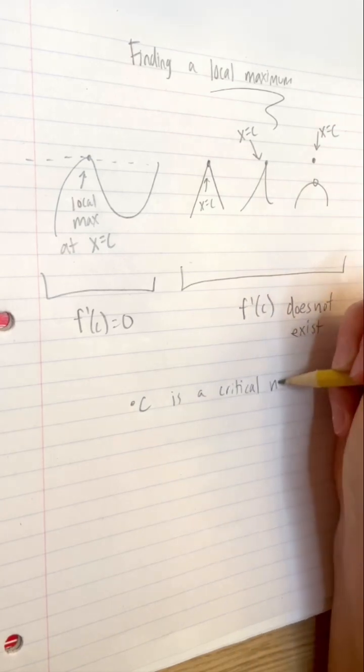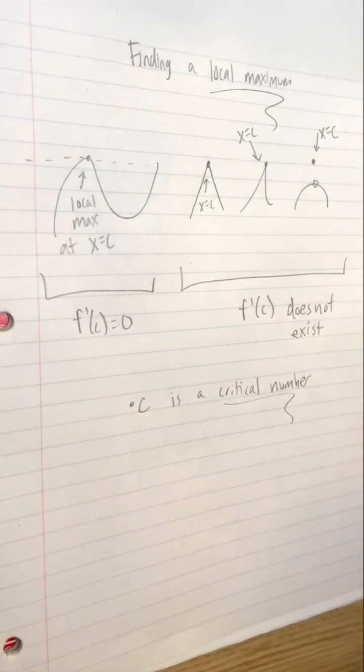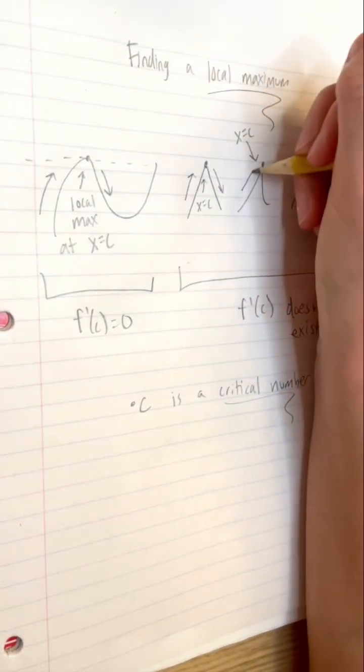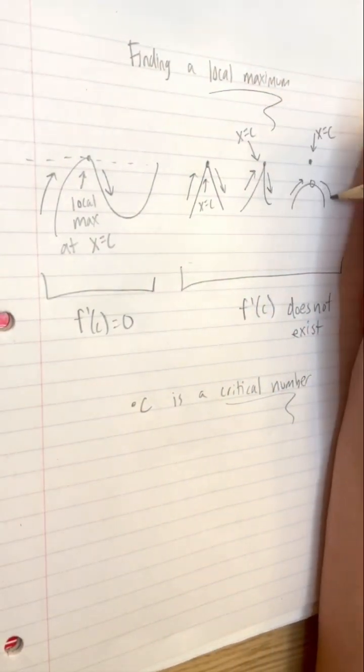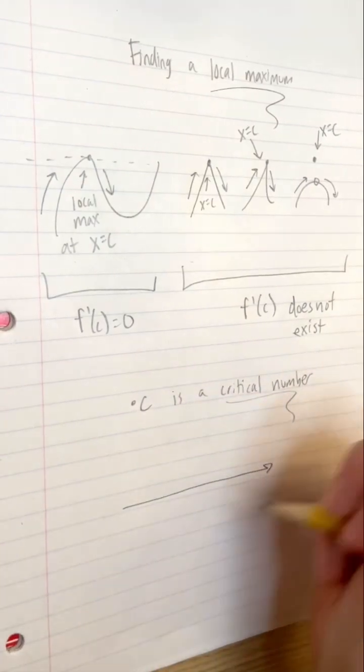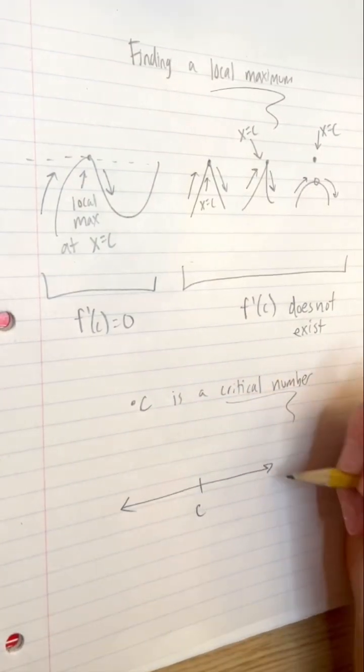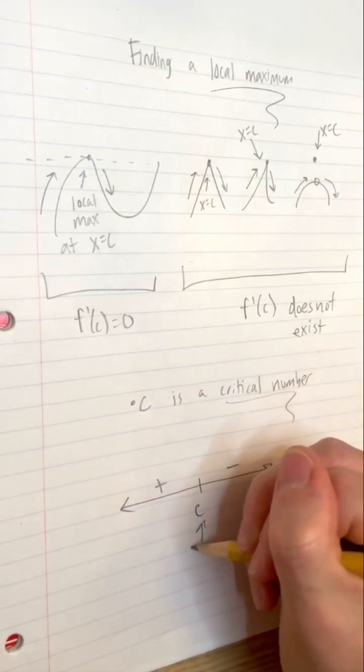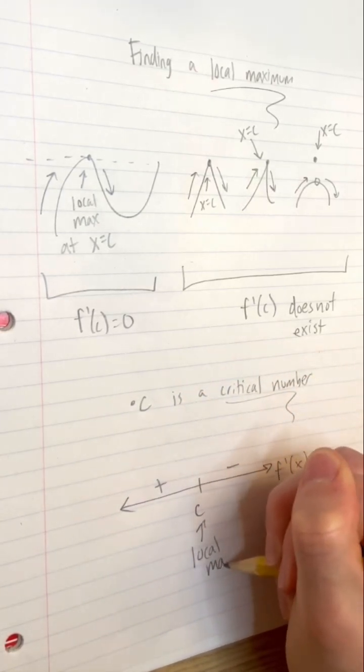But what makes a critical number the site of a local maximum? Notice that to the left of a local maximum, the function is increasing. The tangent line slopes are positive, and so is the derivative. To the right, the function is decreasing. The tangent line slopes are negative, and so is the derivative. So if the derivative changes from positive to negative at your critical number, you have yourself a local maximum.